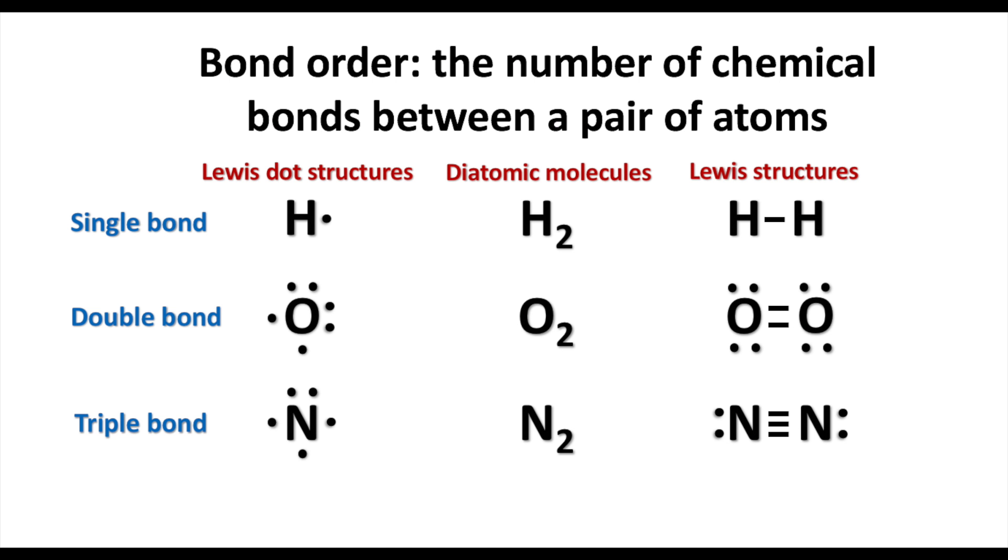When we draw the Lewis structure, we see that the hydrogen-hydrogen bond would be a single bond, so it is the longest. The oxygen-oxygen bond is a double bond, so it would be stronger and shorter in length. The nitrogen-nitrogen is a triple bond, so it would be the strongest bond and have the shortest bond length.